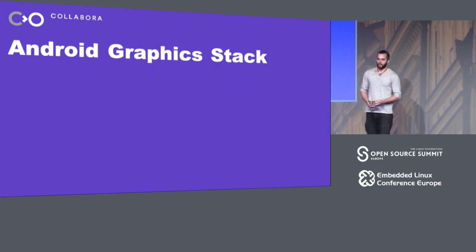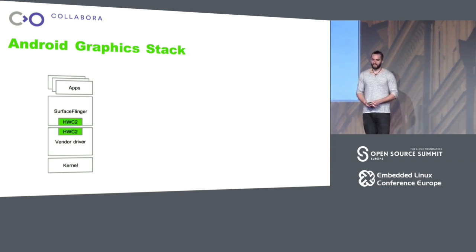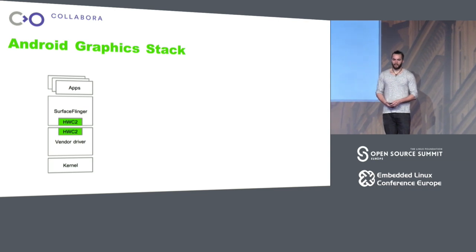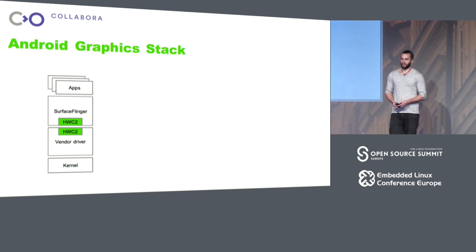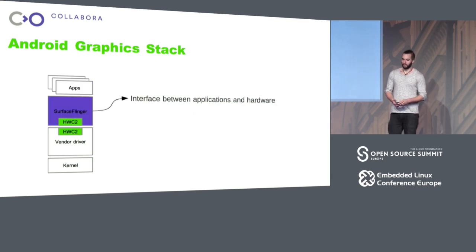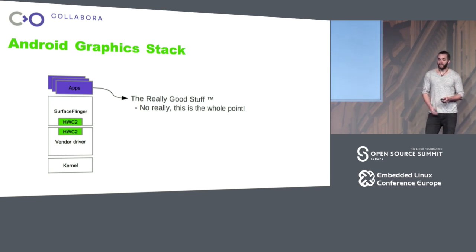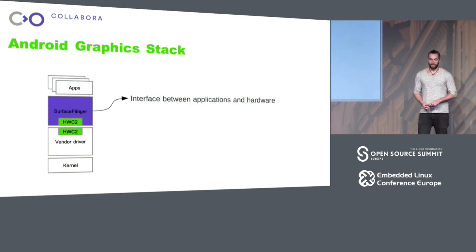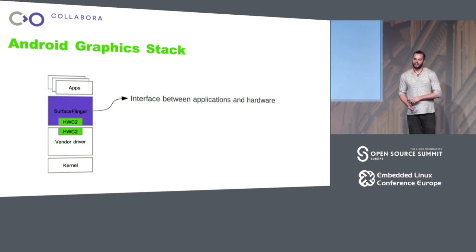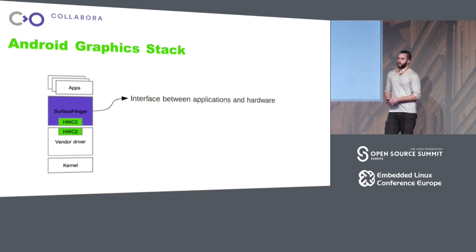So, what does the Android graphics stack look like? This is sort of roughly it. It's a slight simplification, but these are the basic layers. All the pieces that we care about are here. On top, of course, we have the apps. This is the stuff we really care about — it's the whole point, that's what our users want.